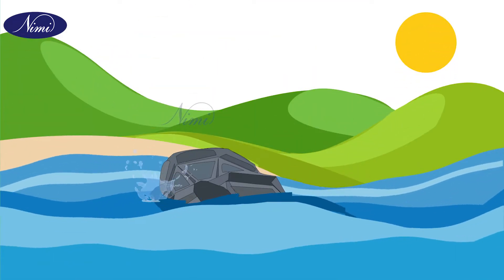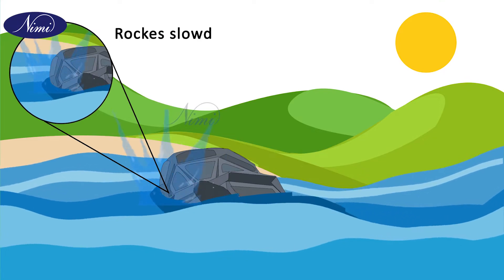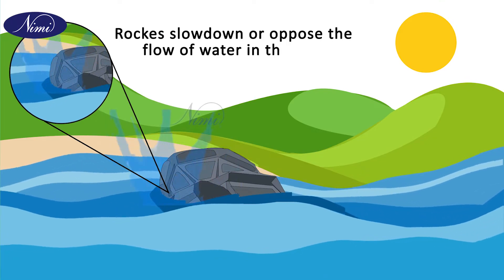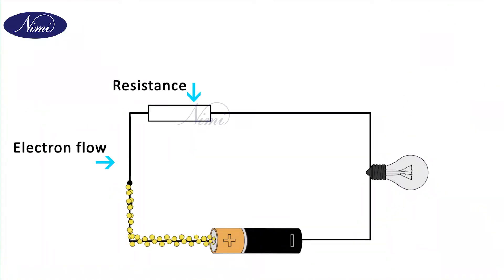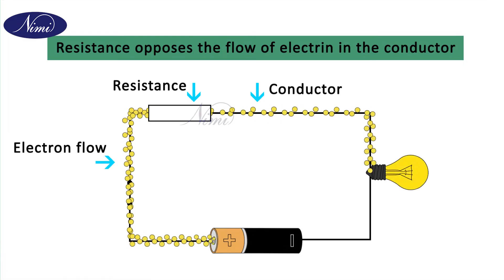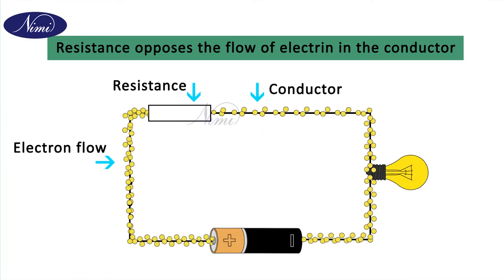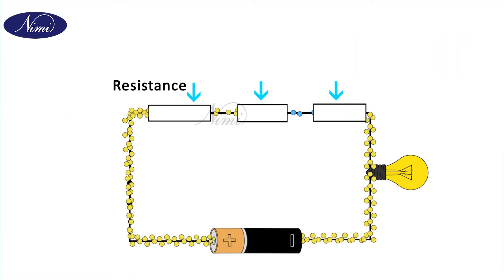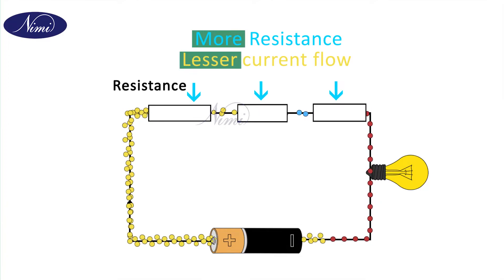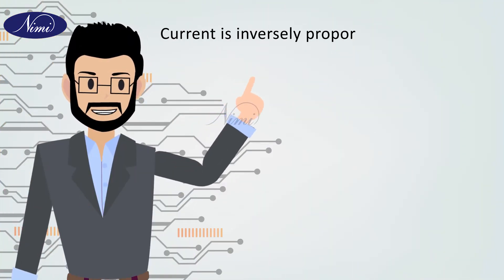In this image, you can see a river containing rocks. These rocks will slow down or oppose the flow of water in the river. Same way, resistance will behave like a rock in a conductor — it will oppose the flow of electrons. In certain materials, resistance will be high, so the current flow will be low. More resistance will cause lesser current flow, and lesser resistance will cause more current flow. Therefore, current is inversely proportional to resistance.